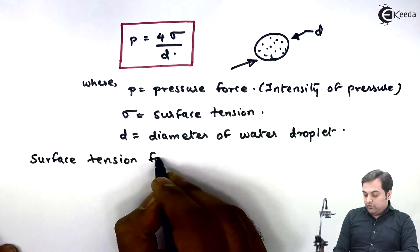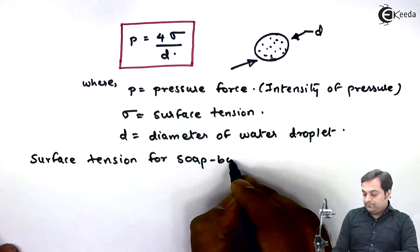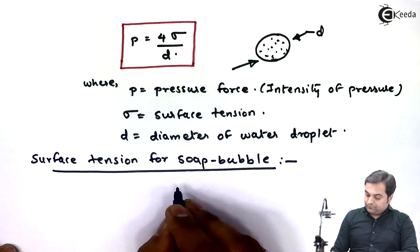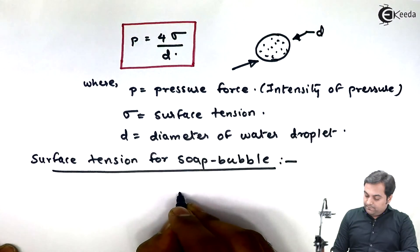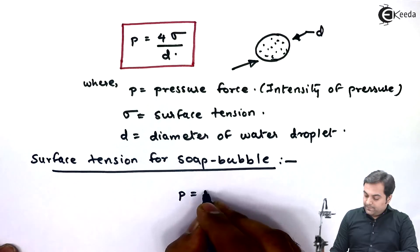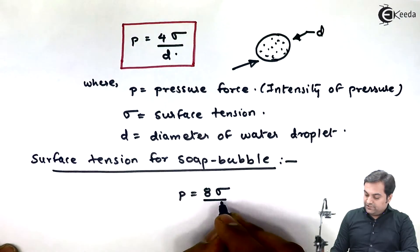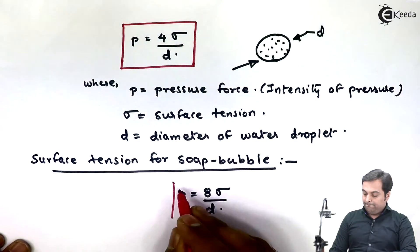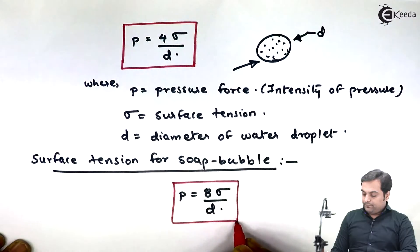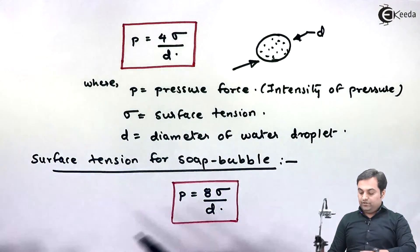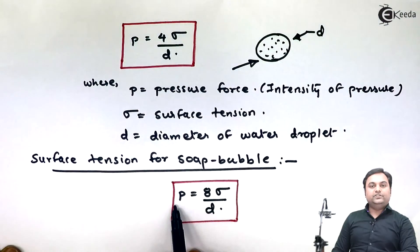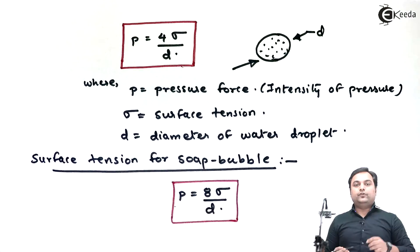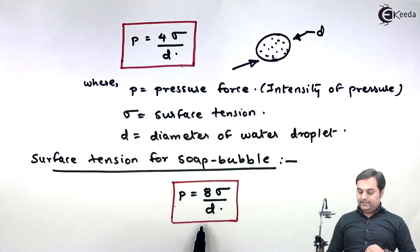For a soap bubble, the formula is: P equals 8 times sigma divided by D, where P is the intensity of pressure, sigma is the surface tension, and D is the diameter. So we have two different formulas — one for a water droplet, which is like a sphere, and another for a soap bubble.